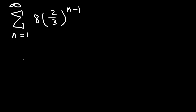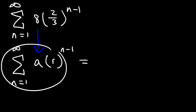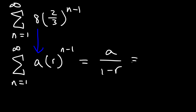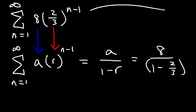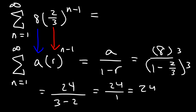Let's try another example — find the sum of this series. We have it in the form a times r raised to the n minus 1, so we can clearly see that a is 8 and r is 2 over 3. The sum equals a over 1 minus r. Multiplying everything by 3: this is 24 over 3 minus 2, which is 24 over 1. So the entire sum is 24.